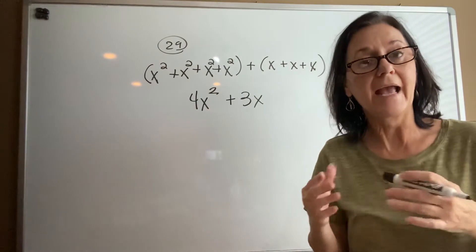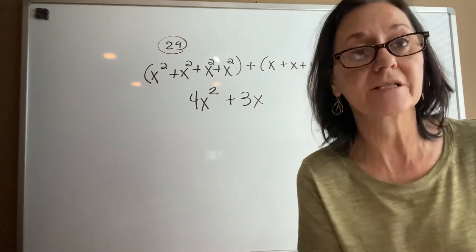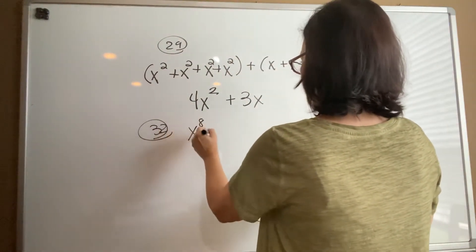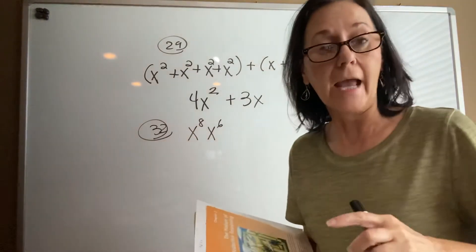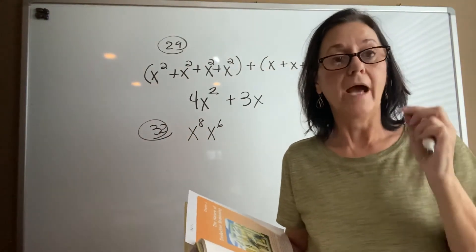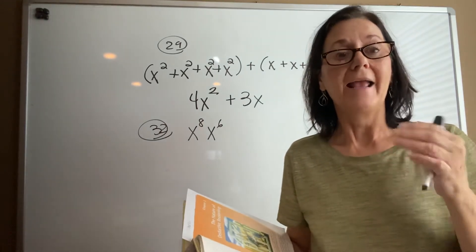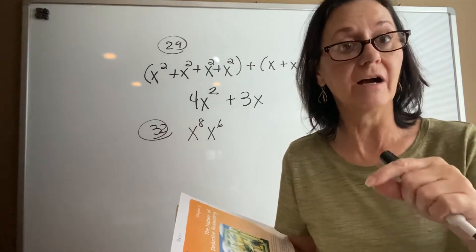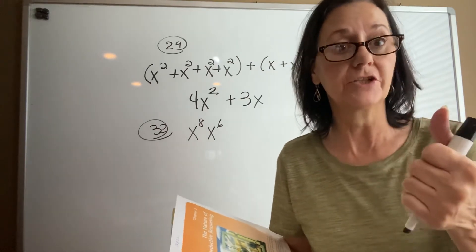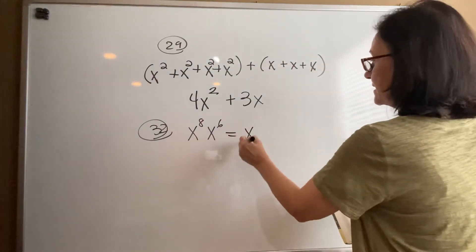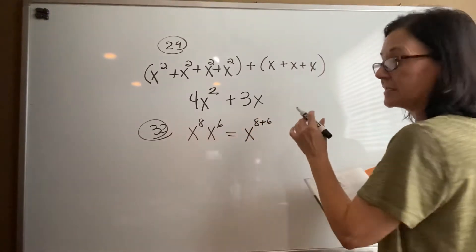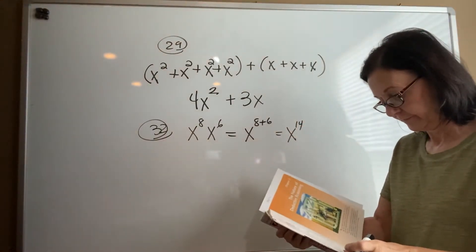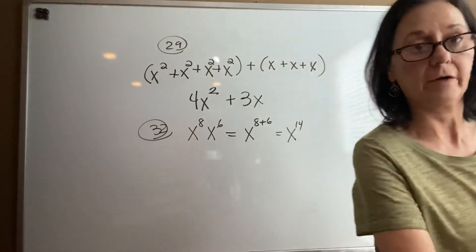When multiplying, there's a different rule. Look at number 32: x to the 8th times x to the 6th. When multiplying like variables, we add their exponents. So that's x to the 8 plus 6, which equals x to the 14th. Multiplication of like variables means addition of their exponents.